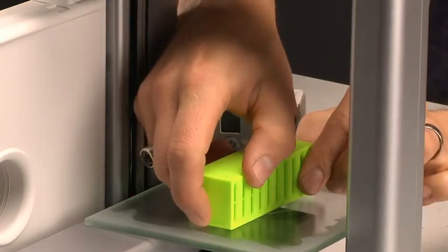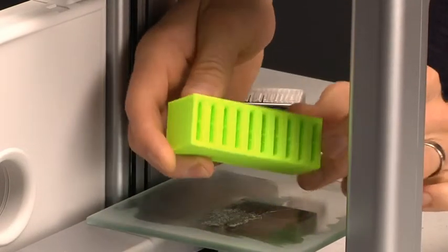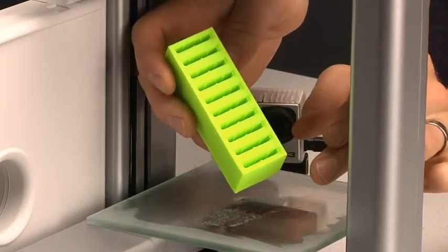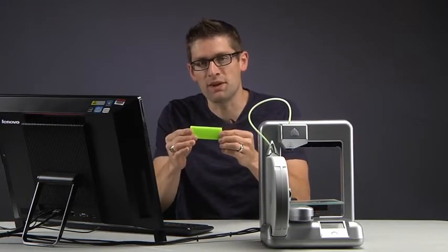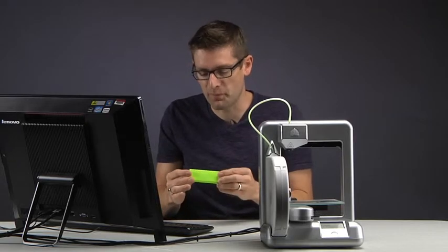When the 3D print job completes, we can just carefully remove the 3D printed object from the platform. This particular printer uses a special adhesive to keep the 3D printed object securely attached to the platform while it's printing.